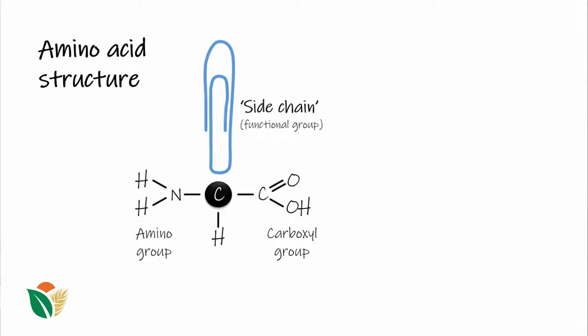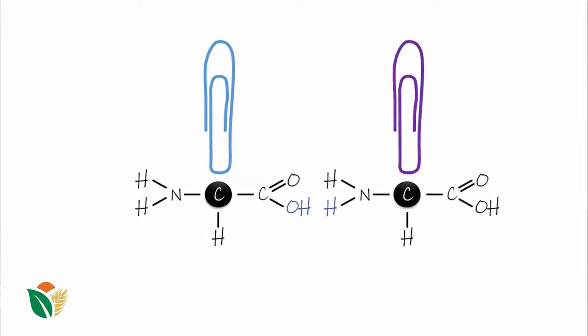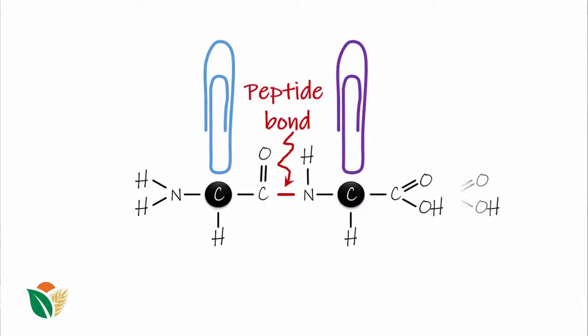Now to actually take an amino acid and join it to another to start forming what we call a peptide or a polypeptide, this occurs by the formation of a peptide bond where we see the amino group of one amino acid joins to the carboxyl group of the other and during this process water is released.